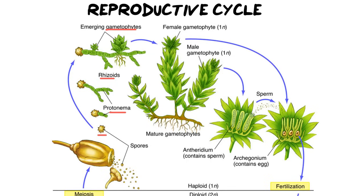We must remember that gametophytes make gametes, so they are the ones who are going to start making the eggs and the sperm. What is so unusual about moss is that they actually spend the majority of their time as gametophytes — so when you often see moss, it's in its gametophyte period. When you look at moss, you actually have two different gametophytes growing next to each other: a female gametophyte growing right next to a male gametophyte. They are haploid — they have half the number of chromosomes. If we were to zoom in on their reproductive structures, we find these at the tips of their bodies or stalks at the very top. The male one is called the antheridium.